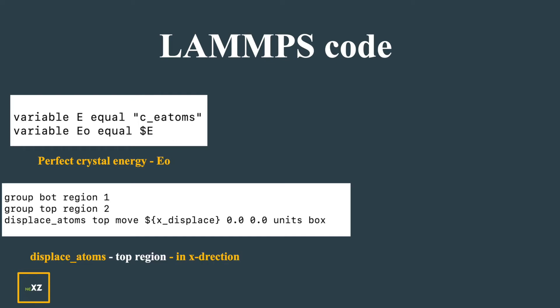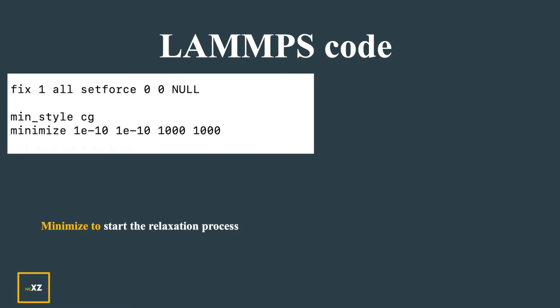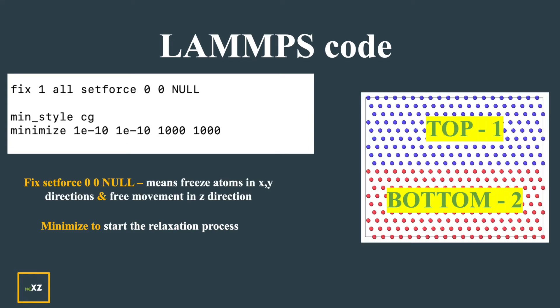Before displacing, we store the energy of the perfect crystal in a variable E0 so we can use it later. Then group bottom is region 1 and group top is region 2. I displace the top group in the X direction by the lattice parameter divided by sqrt(6). Now I minimize to start the relaxation.